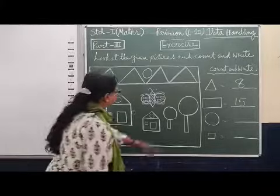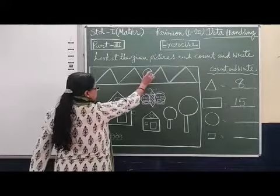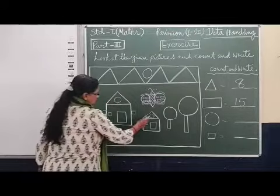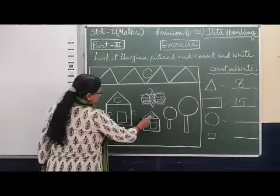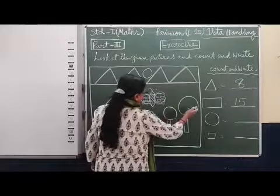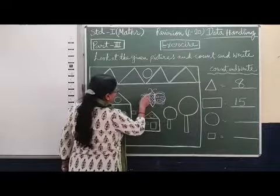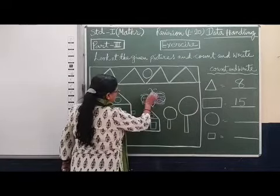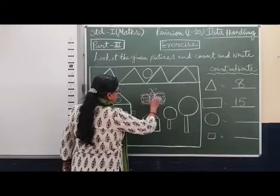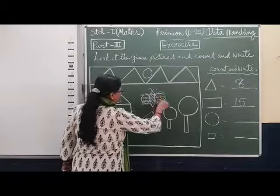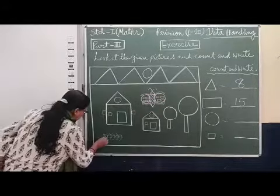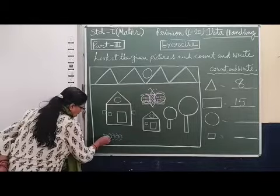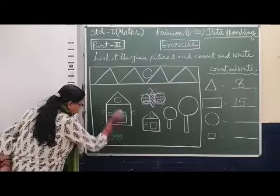Now let us count circles. Starting from the sun: one. In the house: two. Then three, four, five. Continuing: six, seven, eight, nine, ten, eleven, twelve, thirteen, fourteen, fifteen, sixteen. So 16 circles are there — let us verify once again.